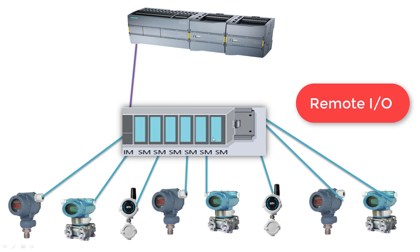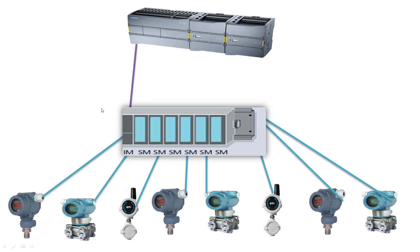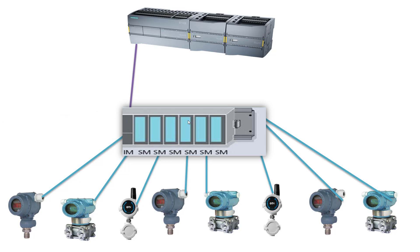Now these modules, if they want to share signals from this remote rack to the PLC, they need a special card. In Siemens, they have an IM (Interface Module). It takes all the signals from these modules and shares that information with your PLC. By this way you have shared all the data from the remote I/Os to the PLC. This is what we call decentralized — you have decentralized peripherals collecting data from instruments in the field and sharing that data with your PLC, reducing wiring cost and making the system less complex.